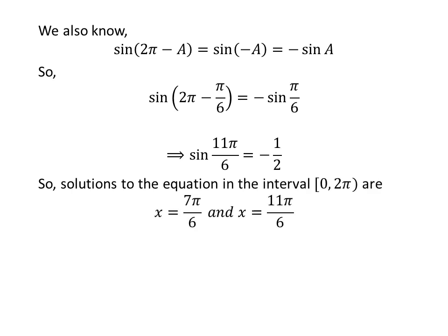So, the solutions to the equation sin of x is equal to minus half in the interval between 0 and 2 times pi are 7 times pi upon 6 and 11 times pi upon 6.